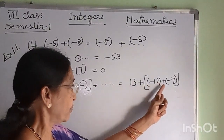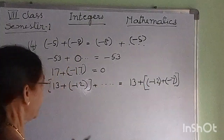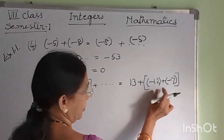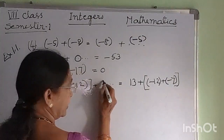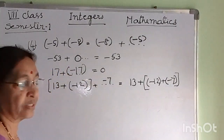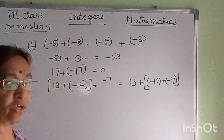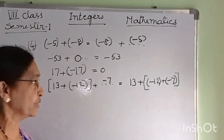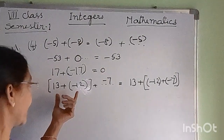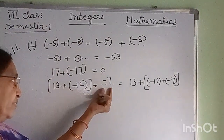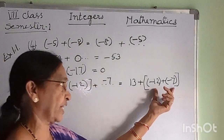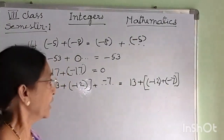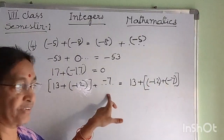Next: 13 plus minus 12 plus blank equals 13 plus minus 12 plus minus 7. Therefore the blank is minus 7. Whatever order we add the integers, we get the same sum. We can add the first two and then the third, or the second two and then the first. We get the same sum. Therefore the answer here is minus 7.